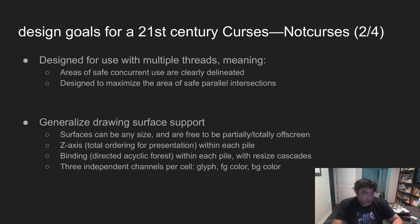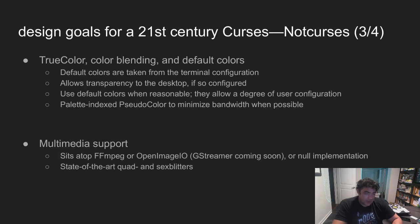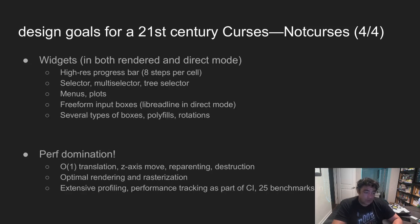Three independent channels exist for each rendered cell: a glyph, a foreground color, and a background color. True 24-bit color support runs deep through the API, though they're often reduced to palette-based pseudo-color transparently to the client app to minimize consumed bandwidth. Perhaps most eye-catching is the quality multimedia support. NotCurses rides atop FFmpeg or OpenImageIO, and uses state-of-the-art blitters to bring usable images and video to terminal apps. Like many other such libraries, there's a rich collection of pre-built widgets. And finally, performance has been a primary focus throughout development. There are 25 benchmarks in the demo application, and their timings are watched religiously. As just one example, NC Display renders images in about one-third of the time as Chafa, despite using more advanced blitting.